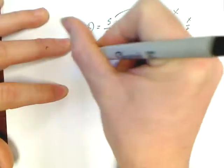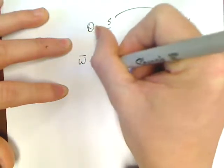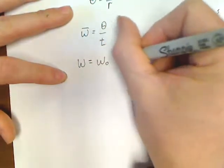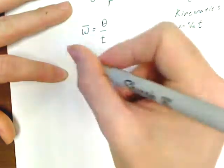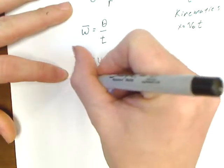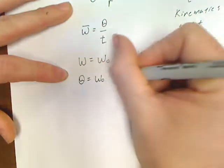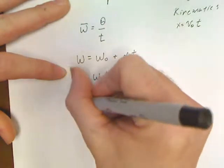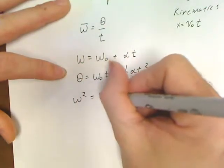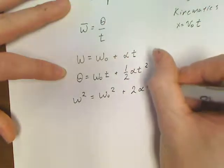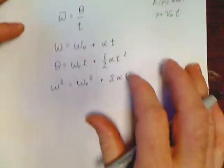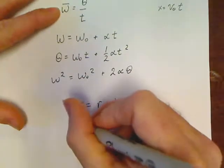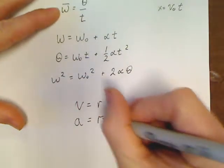Now, the meat of your chapter, though, are formulas that look like this. Omega equals omega-zero plus alpha-t. And then we've got theta equals omega-zero-t plus one-half alpha-t squared. And then we've got omega-squared equals omega-zero-squared plus two alpha-theta. And then we've got a couple other equations, and that's v equals r-omega and a equals r-alpha.